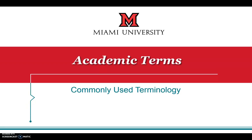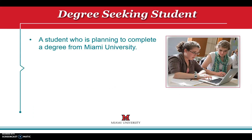This screencast will review commonly used academic terms at Miami University. A degree-seeking student is a student who is planning to complete a degree from Miami University, while an exchange student plans to attend Miami University for only one semester and then graduate from another institution.